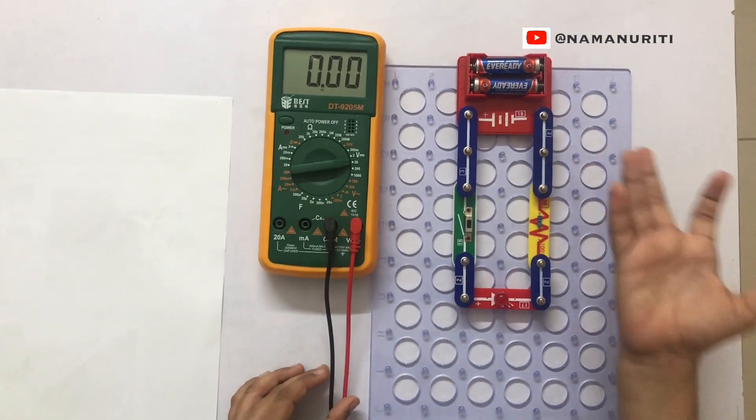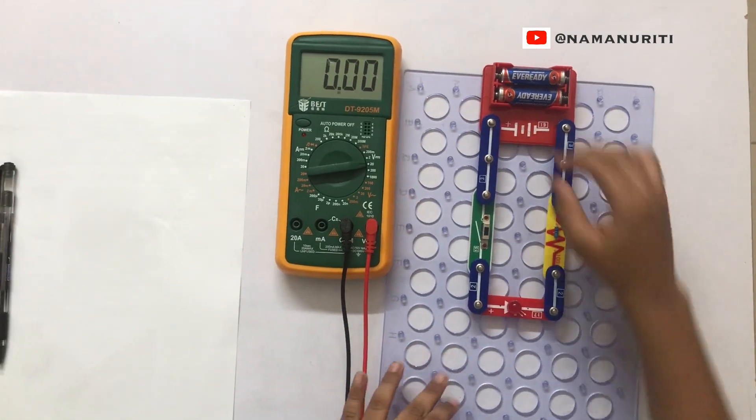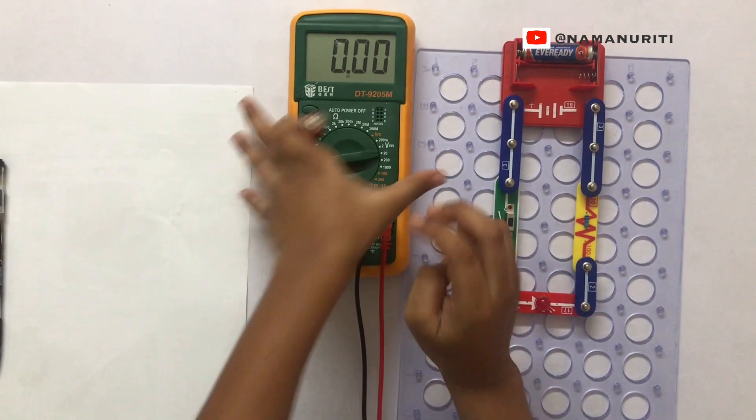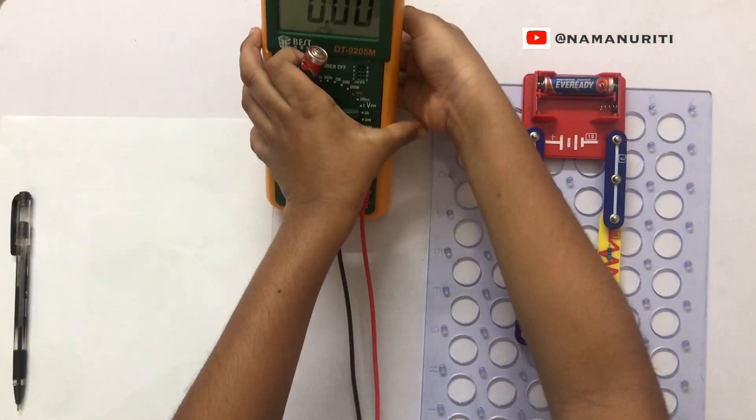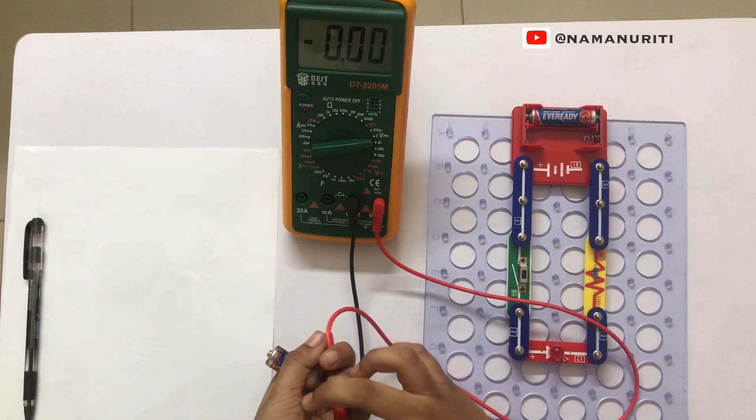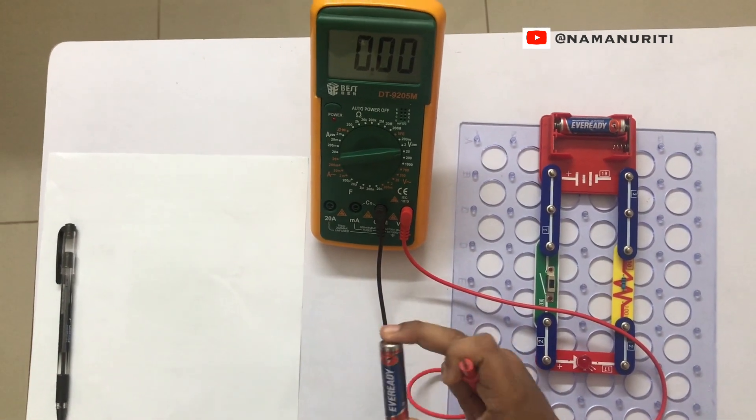Friends, now let's check the voltage. Let's take one battery here. Here we have a multimeter. It can check voltage. I kept it in DC because these batteries are DC.